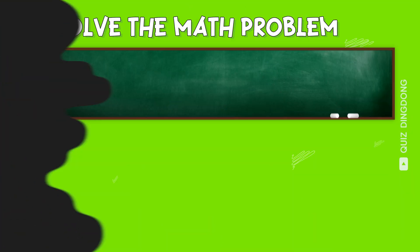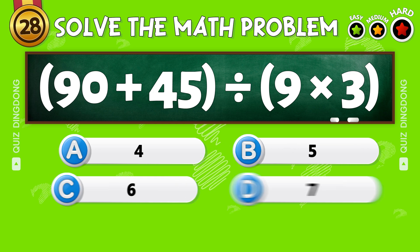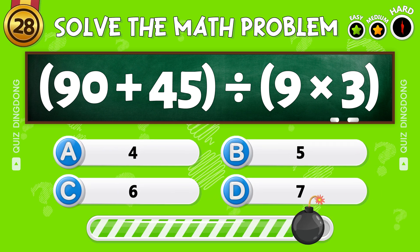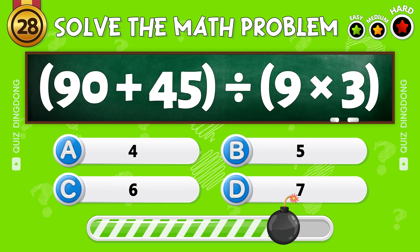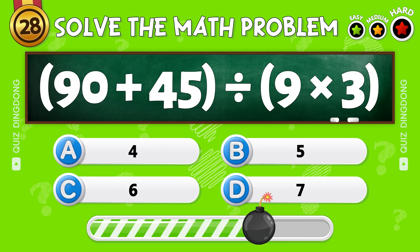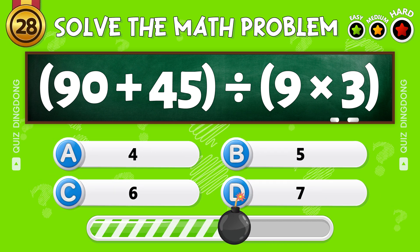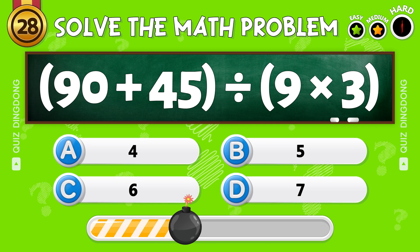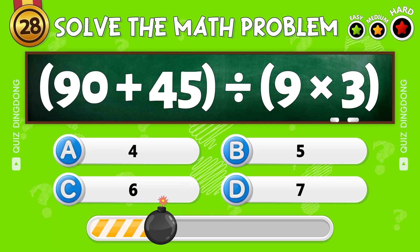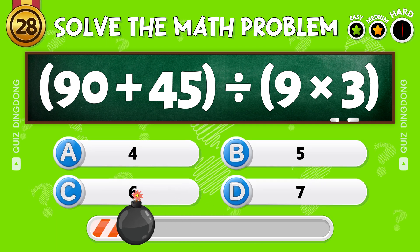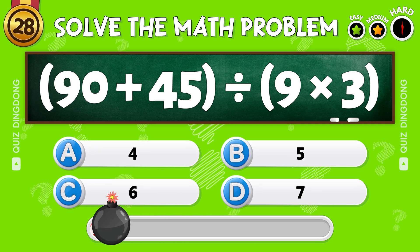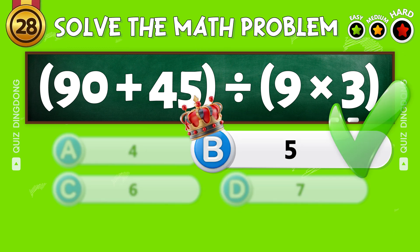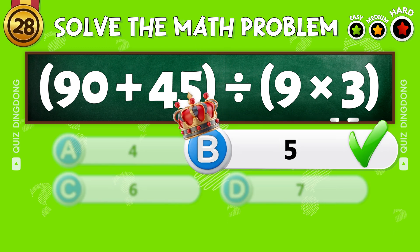Almost there! What's 90 plus 45 divided by 9 times 3? That's correct! The answer is 5!